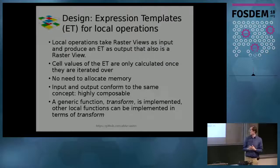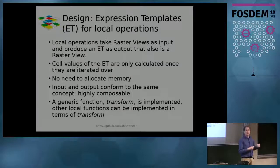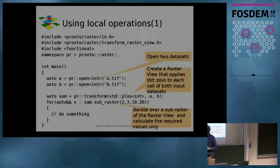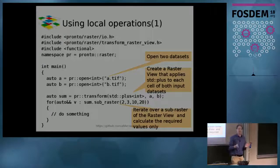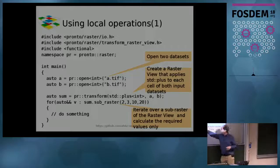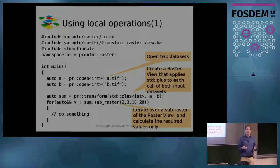There is in the library a very generic transform function where you can give any function and apply it on any number of rasters. Here's an example: open two datasets A and B, apply the transform function using the function plus on A and B. That's cheap — that line doesn't cost anything. Then iterate over this sum, and only at the moment you're iterating over it are you incurring computational cost. And because you use the sub-raster, you only iterate over part of the raster, so you only pay the price of adding those pixels you're actually looking at, not the whole raster.